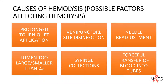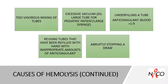Additional causes of hemolysis include: syringe collections and forceful transfer of blood into tubes; too vigorous mixing of tubes; using too great a vacuum — for example, using too large a tube for a pediatric patient or using too large a syringe; underfilling a tube so that the ratio of anticoagulant to blood is greater than 1 to 9; reuse of tubes refilled with inappropriate amounts of anticoagulants; and abruptly stopping a draw — for example, withdrawing a 6 ml tube when only half of it is filled.